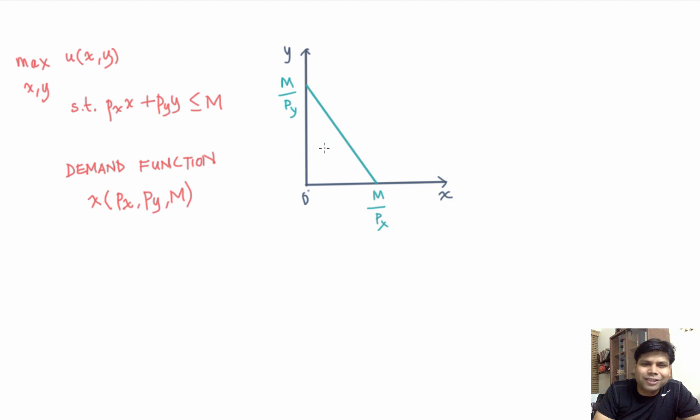Now, if this consumer likes to consume more, then the solution or the demand must satisfy this property that the solution will lie on the budget line. It will never lie below the budget line.